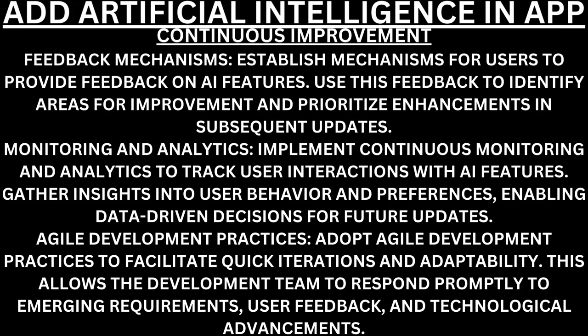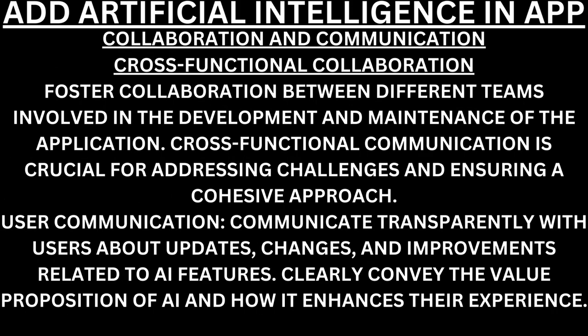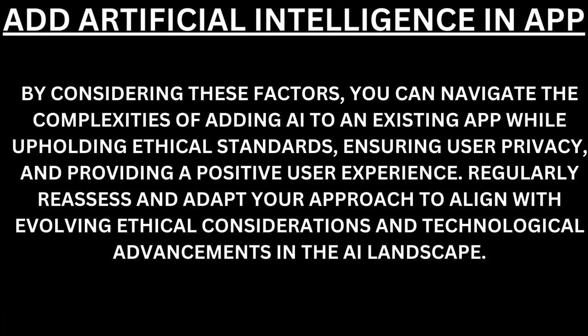Agile development practices. Adopt agile development practices to facilitate quick iterations and adaptability — this allows the development team to respond promptly to emerging requirements, user feedback, and technological advancements. Collaboration and communication. Cross-functional collaboration. Foster collaboration between different teams involved in the development and maintenance of the application — cross-functional communication is crucial for addressing challenges and ensuring a cohesive approach. User communication. Communicate transparently with users about updates, changes, and improvements related to AI features — clearly convey the value proposition of AI and how it enhances their experience.